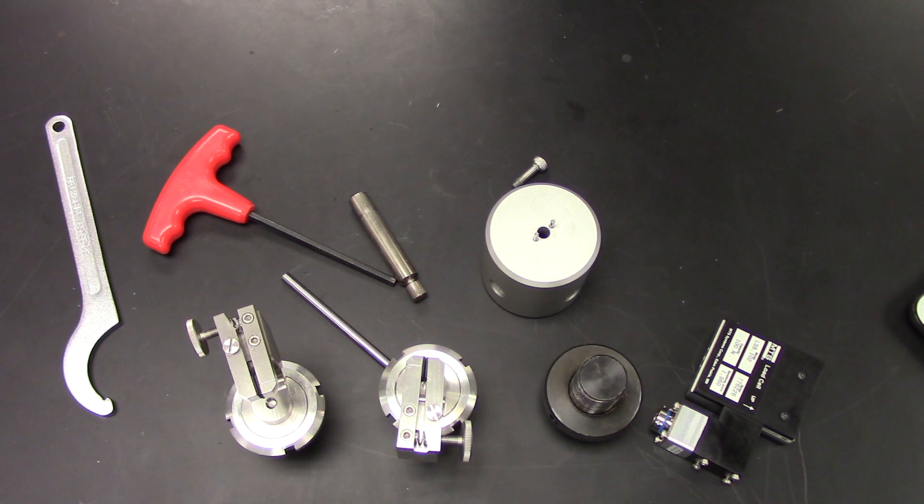Adding grips and load cells for low force testing is a bit different from the high force testing. The most important distinction is that the low force grips and load cells are loaded together rather than separately. For this example, I'm going to connect the 100 newton vice style grip to the 100 newton load cell.